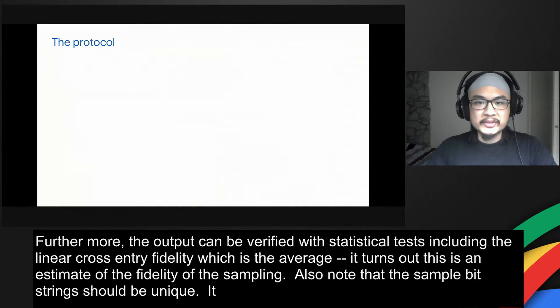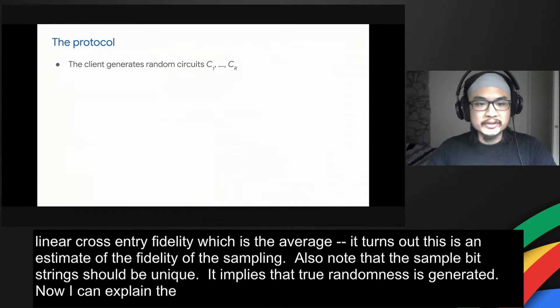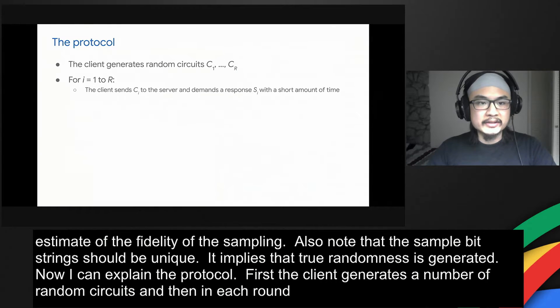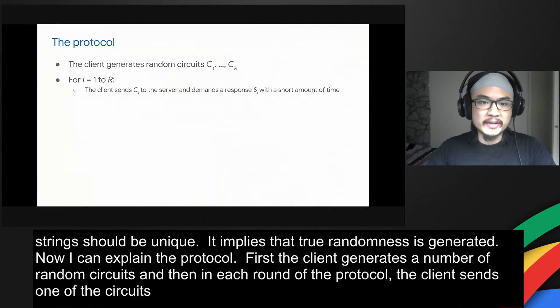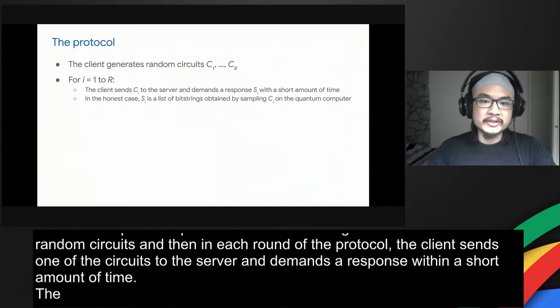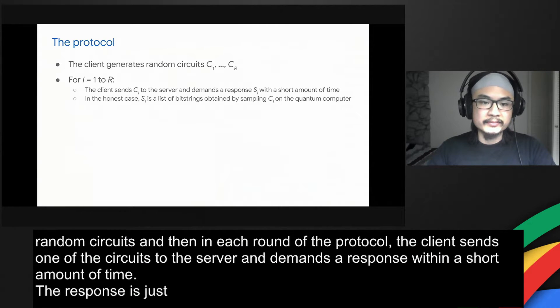Now I can explain the protocol. First, the client generates a number of random circuits. Then, in each round of the protocol, the client sends one of the circuits to the server and demands a response within a short amount of time. In the honest case, the response is just a list of bit strings obtained by sampling the circuit on the quantum computer.